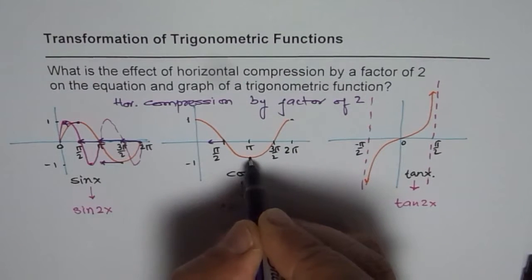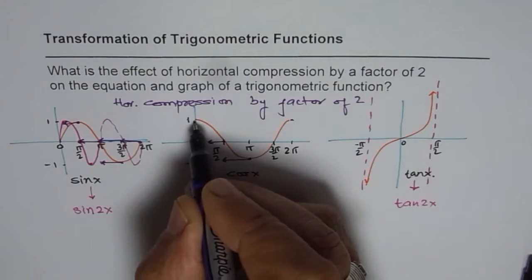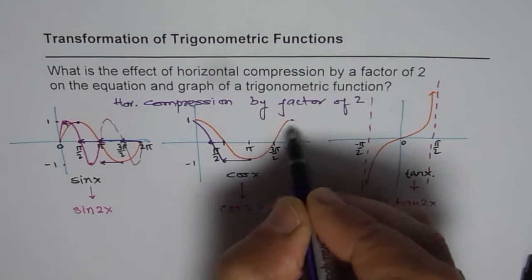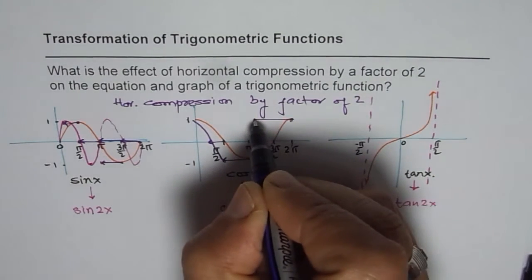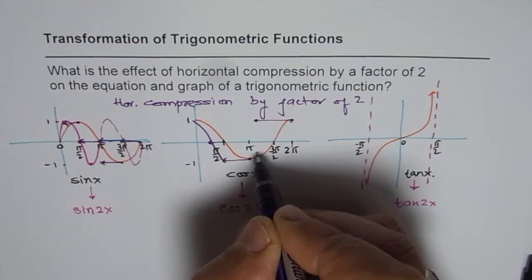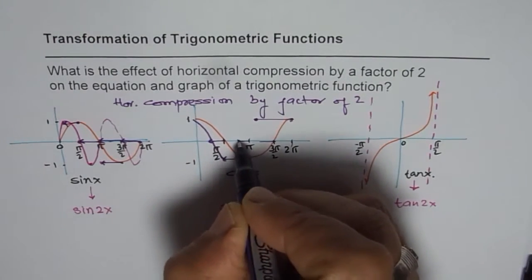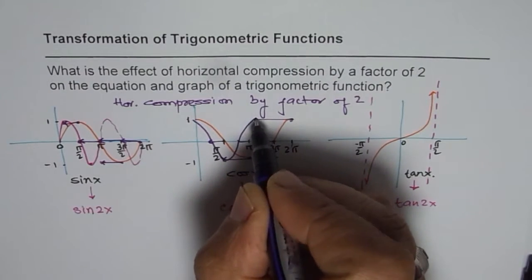So pi value will come at pi by 2. So the graph will be kind of like this. And then this 2 pi will come at pi. So it will end here. So it will kind of, and this point will come here.